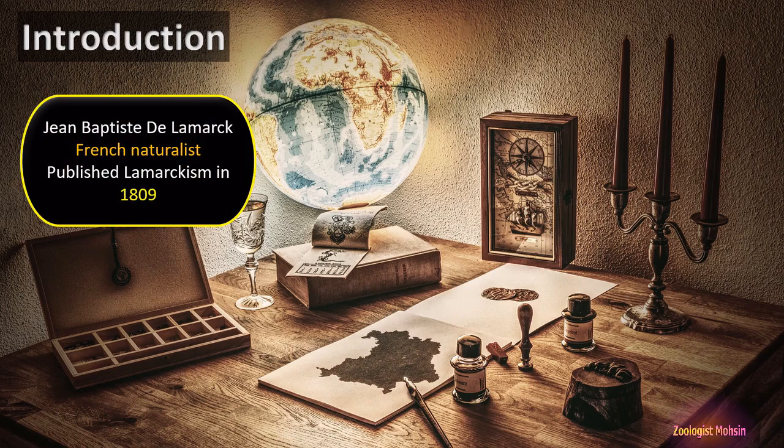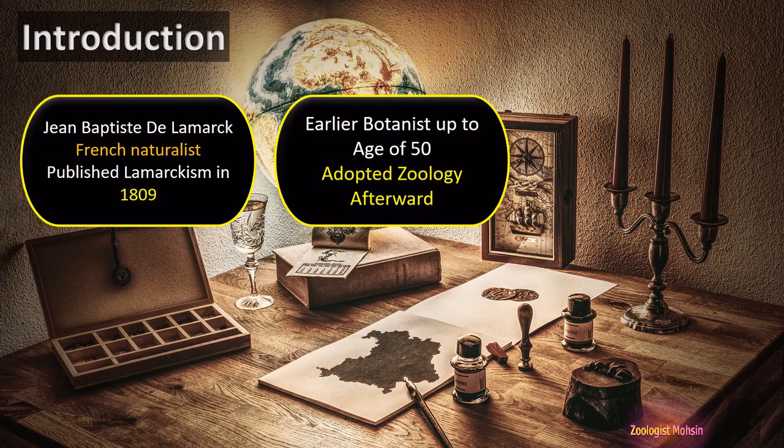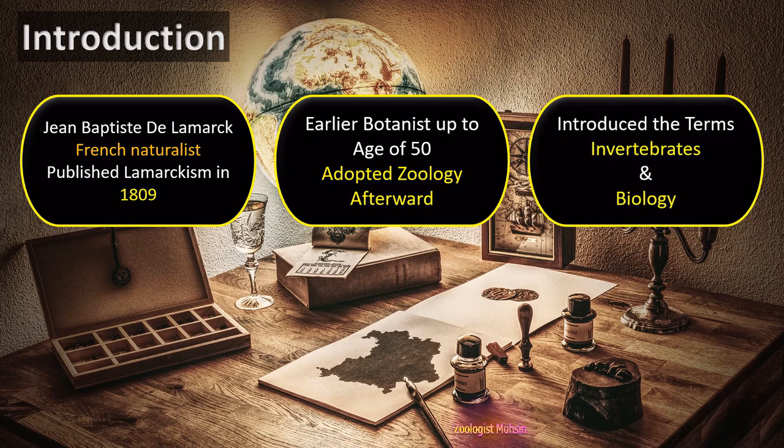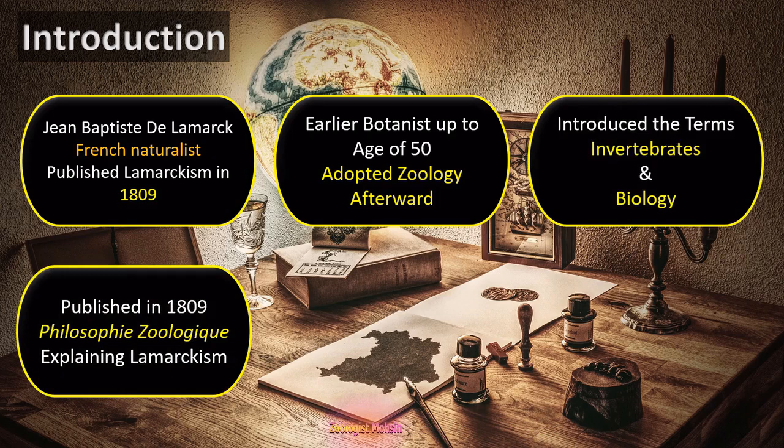Jean-Baptiste de Lamarck was a French naturalist who published Lamarckism in 1809. Earlier he was a botanist for up to 50 years of his life, but later he adopted zoology and started studying invertebrates in depth and detail. He was the first person to introduce the terms 'invertebrates' and 'biology'.